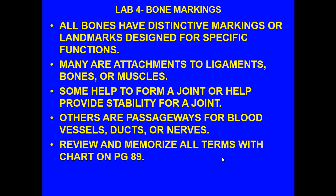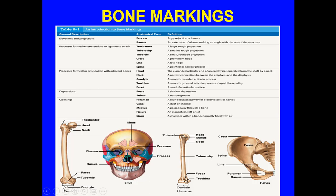Bone markings — you really need to know the terms and where they're located on the various bones. All bones have distinctive markings or landmarks designated for specific functions. Many are attachment sites to ligaments, bones, muscles, and tendons. Some help form a joint or provide stability. Others are passageways for blood vessels, ducts, or nerves. If you look at page 89, I encourage you to review and memorize all terms on the chart — all the anatomical terms and understand the definitions behind them.